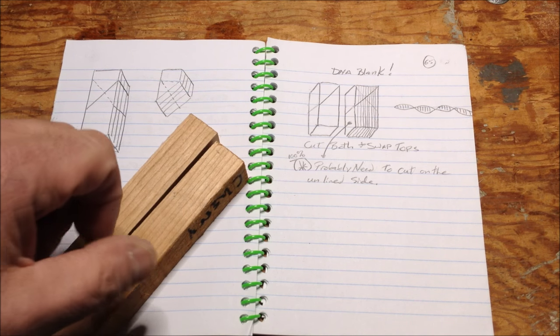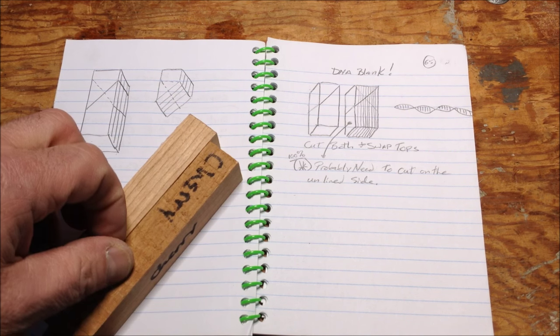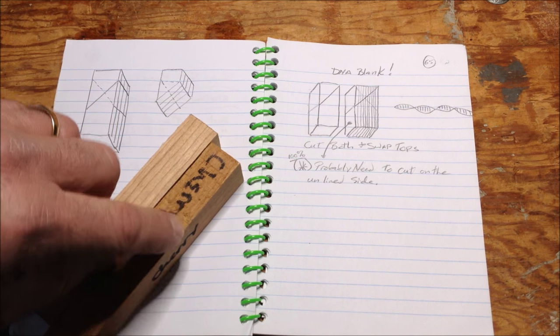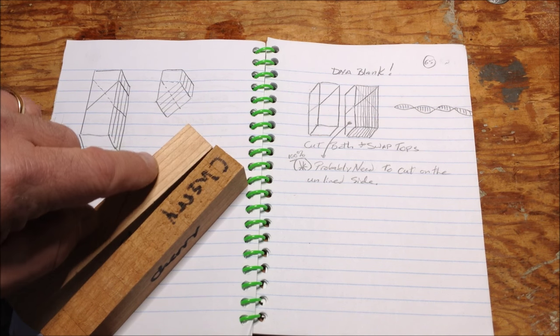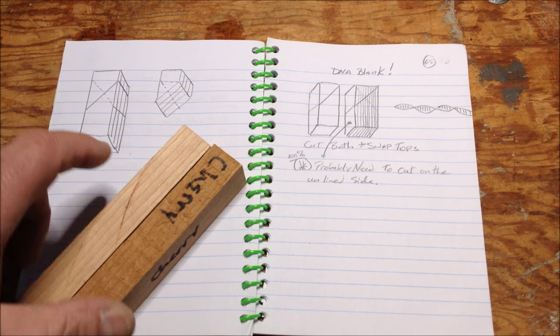Once the glue dries, I'm thinking I can flip the blank over, cut my angle, then I'll take the other blank, I'll cut the same angle on that blank, I'll swap the tops and glue them together.